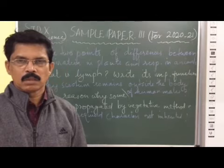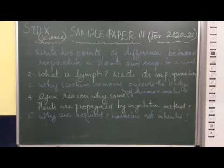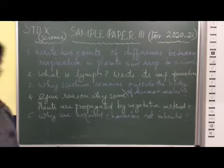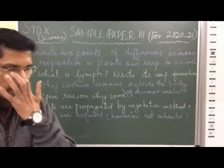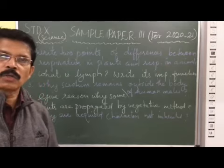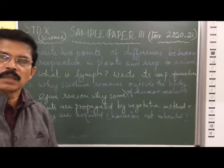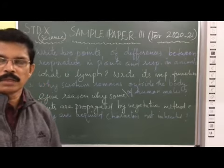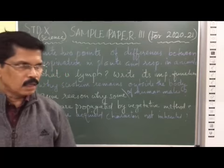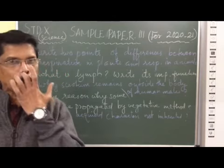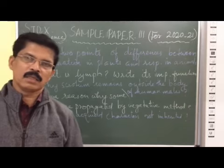Now the last question - why are acquired characters not inherited? Acquired characters, for example change in the skin color, change in our body hair color, and many other characters are called somatic characters as they do not make any change in the DNA of the germ cells. They cannot be inherited. These traits which develop during the lifetime of an organism are called acquired characters. They only make changes in the somatic body parts and do not make changes in the DNA of the germ cells. Hence they are not inherited. Thank you.